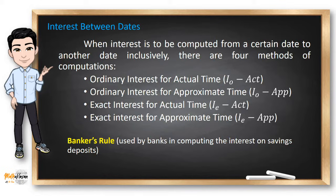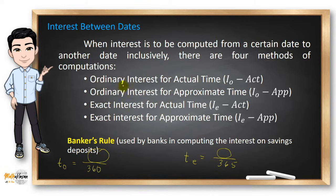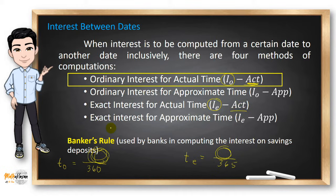Knowing the actual and approximate days is very important whenever we compute for interest between dates. The formula for the time in ordinary interest always uses 360 days as the denominator, while the exact interest always uses 365 days. Ordinary interest with actual time is called the Banker's Rule because it's often used by banks in computing interest on savings or deposits. So whenever you go to a bank, they usually use this computation for the interest.